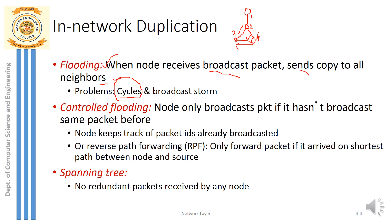To fix this, we use controlled flooding — the uncontrolled version being the problem. Controlled flooding means a node only broadcasts a packet if it has not broadcasted that same packet before. At node 3, it should be able to identify duplicate arriving packets, accept only one copy, and discard the other duplicate when it arrives.